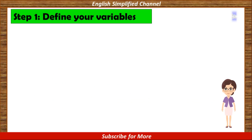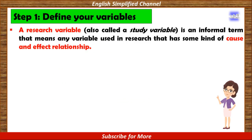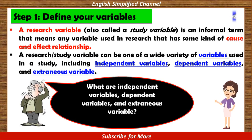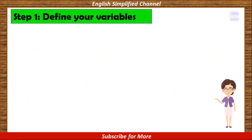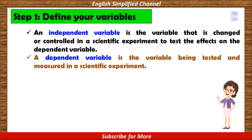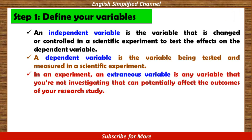Step 1: Define your variables. A research variable, also called a study variable, is an informal term that means any variable used in research that has some kind of cause and effect relationship. A research variable can be one of a wide variety, including independent variables, dependent variables, and extraneous variables. An independent variable is the variable that is changed or controlled in a scientific experiment to test the effects on the dependent variable. A dependent variable is the variable being tested and measured. In an experiment, an extraneous variable is any variable you are not investigating but can potentially affect the outcomes of your research study.